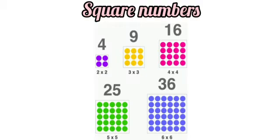In the next figure, four dots in each row and there are four rows, so 4 multiplied by 4 is equal to 16 dots. In the fourth figure, five dots in each row and there are five rows, so 5 multiplied by 5 is equal to 25 dots. In the next figure, six dots in each row and there are six rows, so 6 multiplied by 6 is equal to 36 dots.